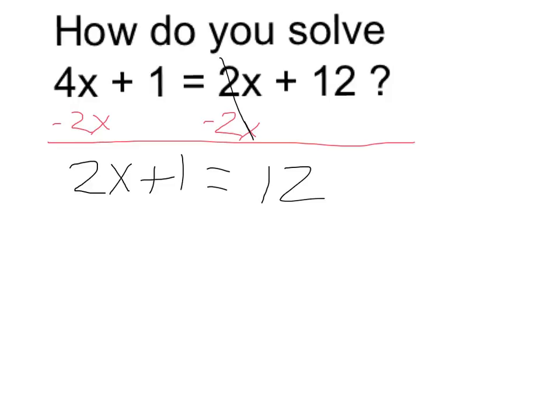Now I have a two-step equation which I can solve. I'm going to first get rid of the 1 by subtracting 1. Anything I do on one side I have to do to the other. The ones on the left side cancel, leaving me with 2x, and 12 minus 1 is equal to 11.